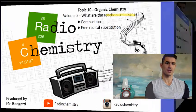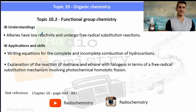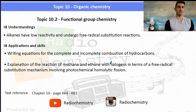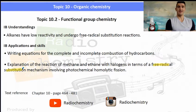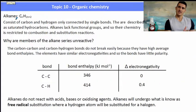The IB understandings and applications state that alkanes generally have low reactivity and undergo free radical substitution. We need to write equations for combustion and incomplete combustion of hydrocarbons and know the mechanism for free radical substitution, which is the focus of this video. Alkanes have the general formula CₙH₂ₙ₊₂.